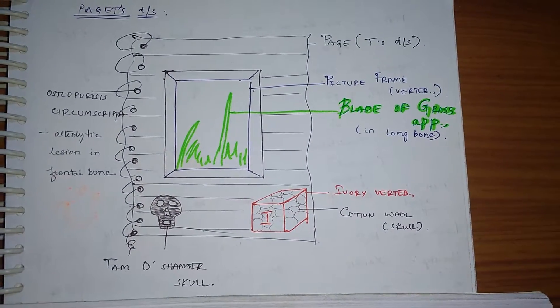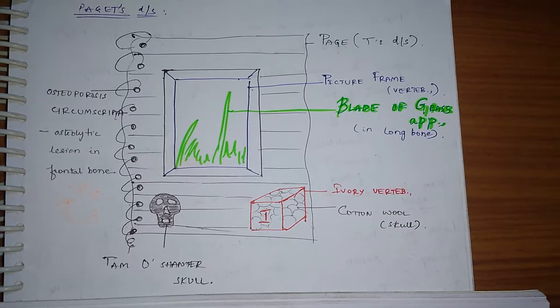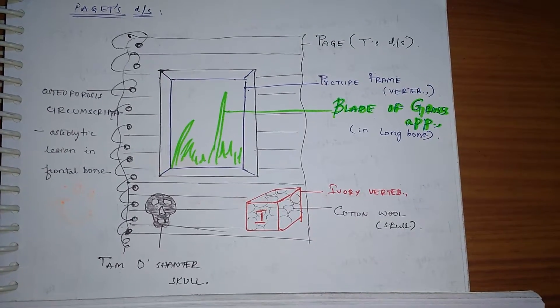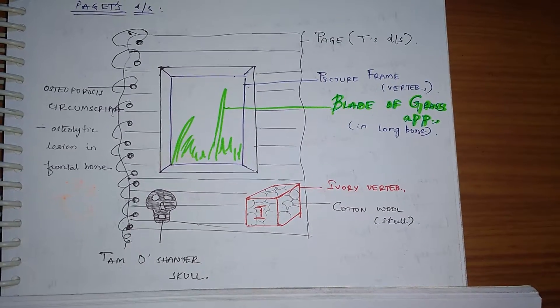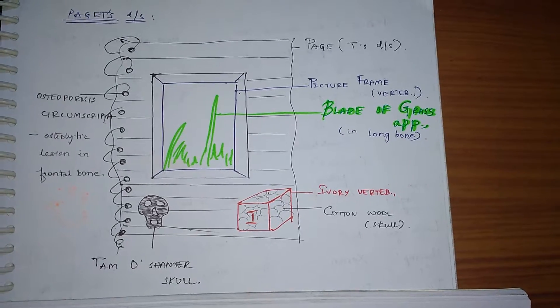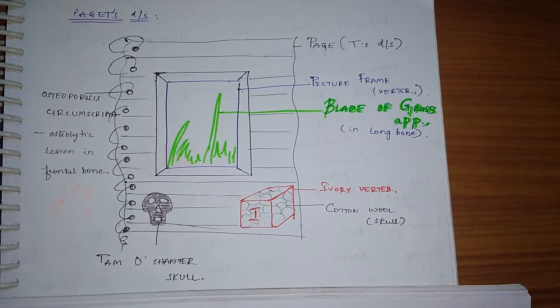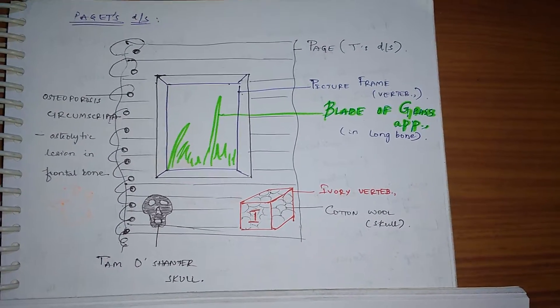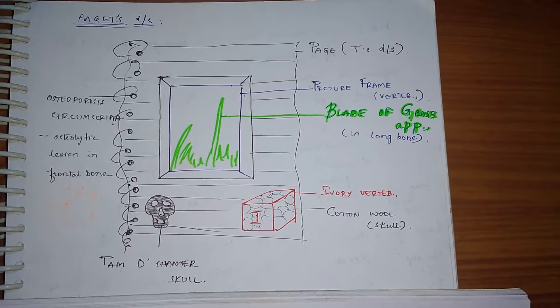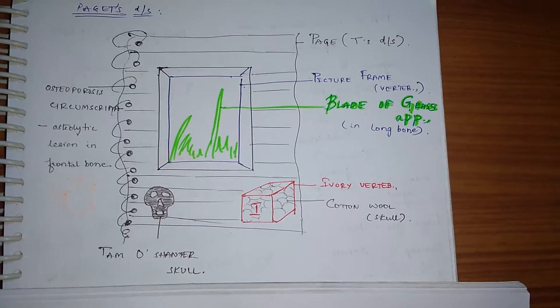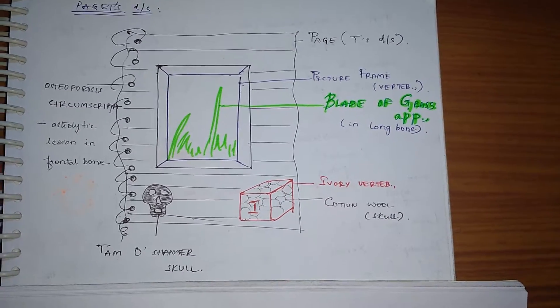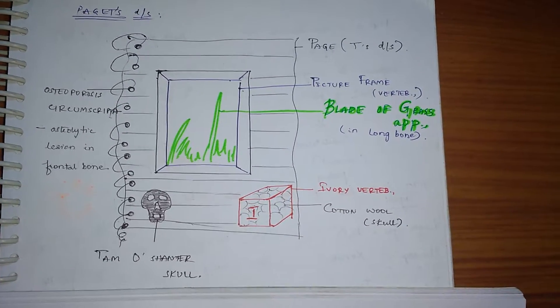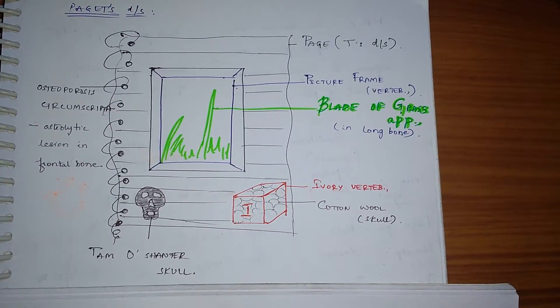So here we have spiral-binded pages on which we have kept a picture frame which has a picture of blade of grass. The corners on both right and left side: we have on the right side an ivory vertebrae box which has cotton wool, and on the left side we have a skull picture.